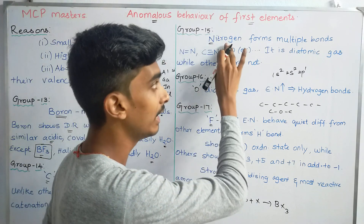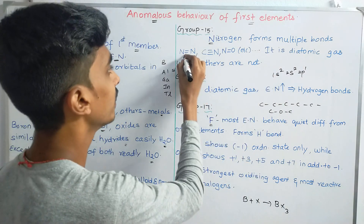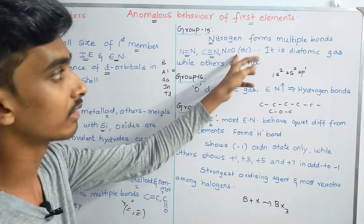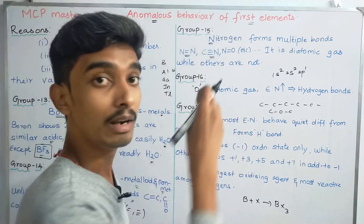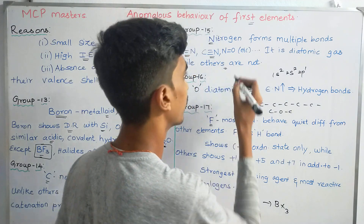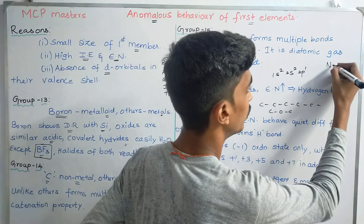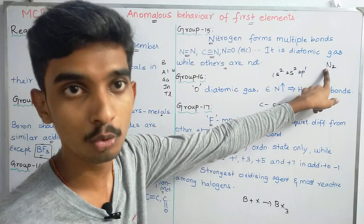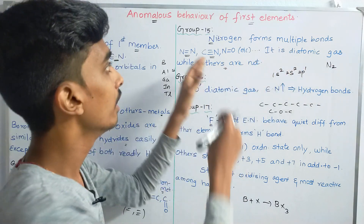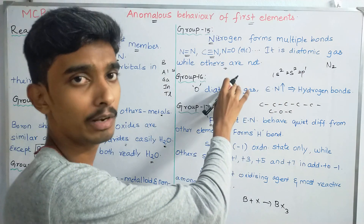In Group 15, Nitrogen shows multiple bonds — double bonds and triple bonds. Nitrogen-nitrogen double bonds, carbon-nitrogen triple bonds (cyanide group), and nitrogen-oxygen double bonds. Nitrogen is also a diatomic gas (N₂), while the other Group 15 elements are not diatomic gases. This is a different property of the first element Nitrogen.